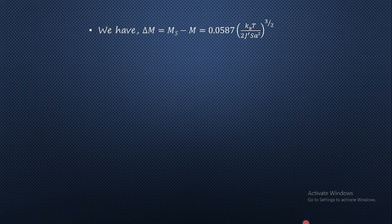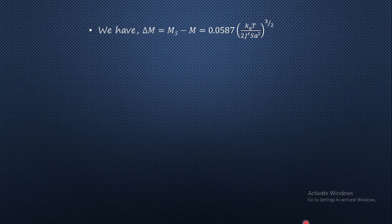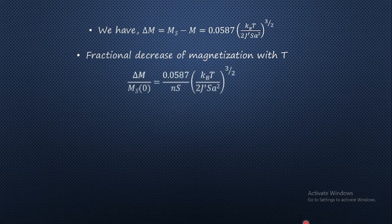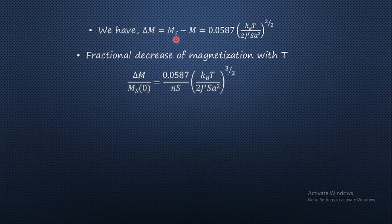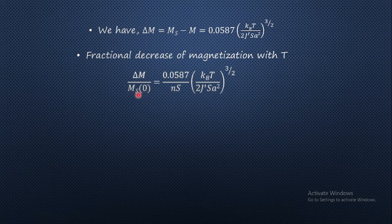Thus we will have ΔM = Σ_k n_k. Now in order to understand Bloch T^(3/2) law, let us consider the fractional decrease of magnetization with respect to temperature — that is the ratio of decrease in magnetization to the saturation magnetization: ΔM / Ms(0), since it is defined at T = 0 Kelvin. We substitute the ΔM value from above, and from equation number 1 we know that saturation magnetization equals N × S.